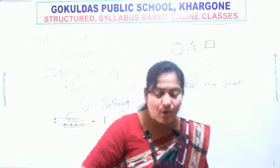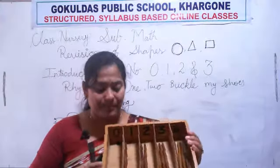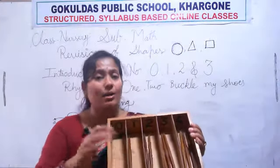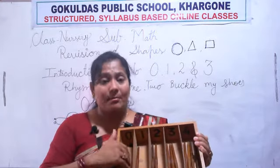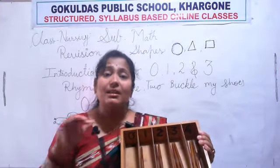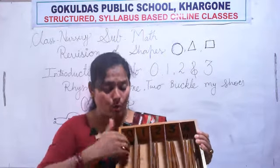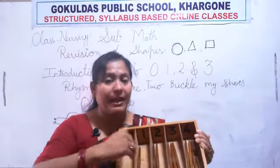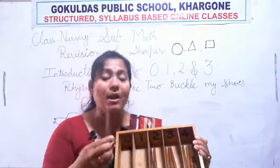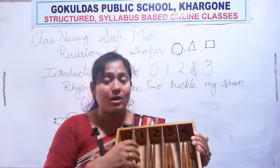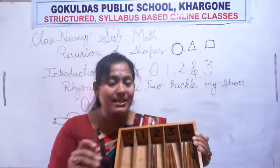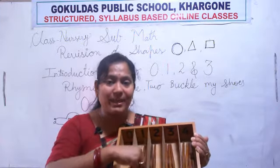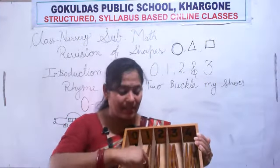Now see here — how many sticks are here? No sticks. Means nothing — zero. No stick means zero. Nothing. And now next — how many sticks? One stick. How many sticks? One stick.